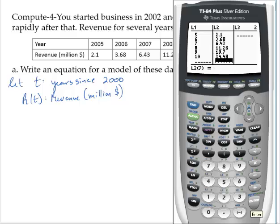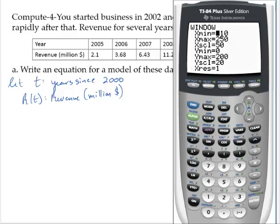So let's get a reasonable window here. My window, I'm going to go from 0 to 11 on the x-axis and by 1's. And on the y's, let's go from $0 million to $40 million. And I'll use a scale of, how about 10?